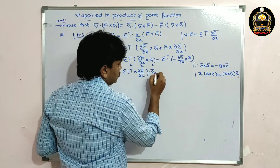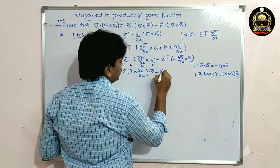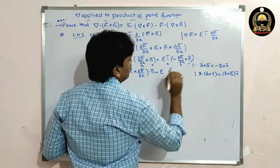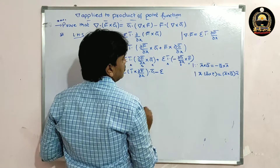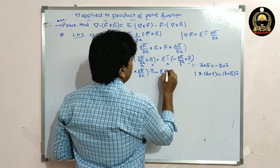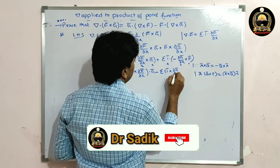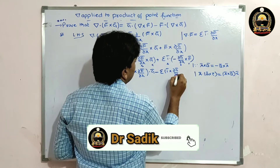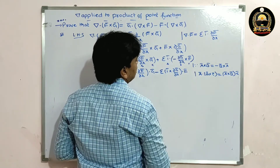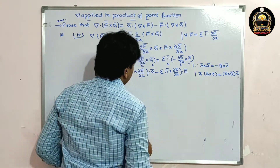For the second term, we have minus summation. Applying the same triple product identity a-bar dot b-bar cross c-bar equals a-bar cross b-bar dot c-bar, we can write it as summation i-bar cross dou g-bar by dou x dot f-bar.